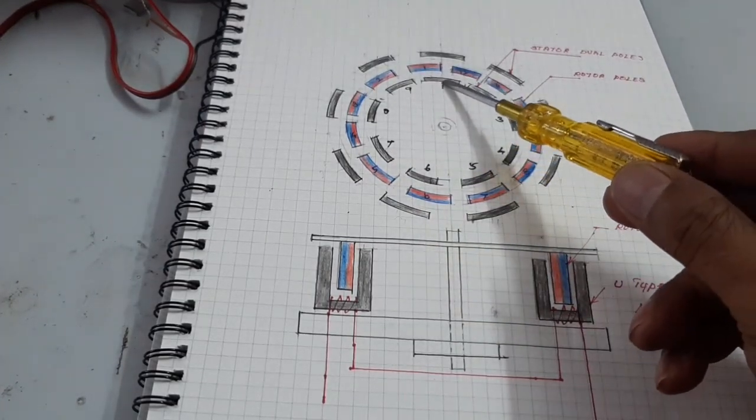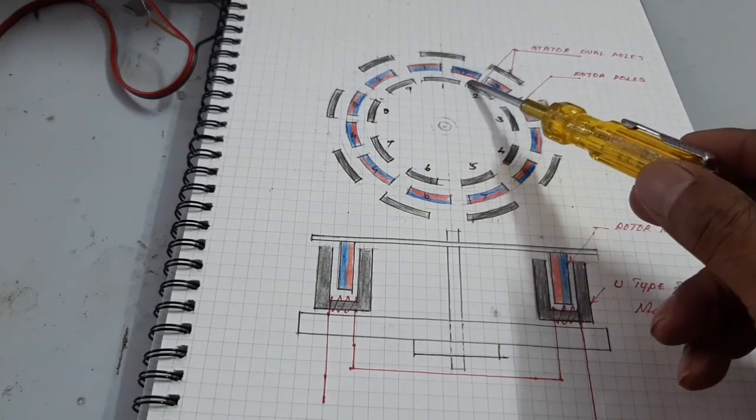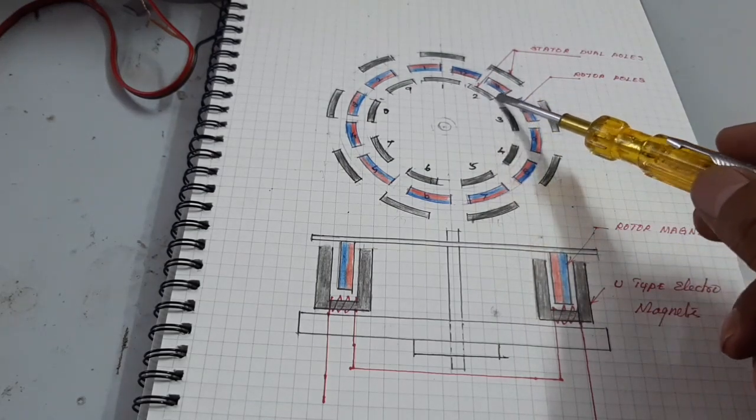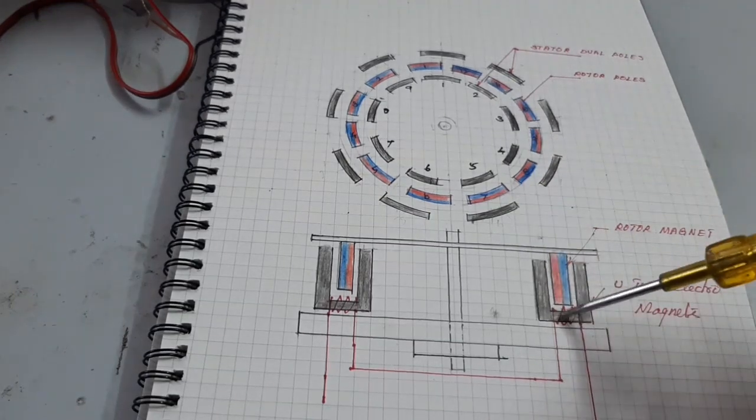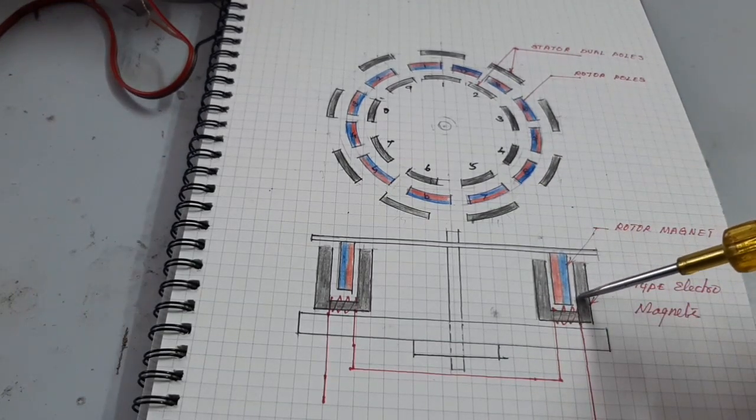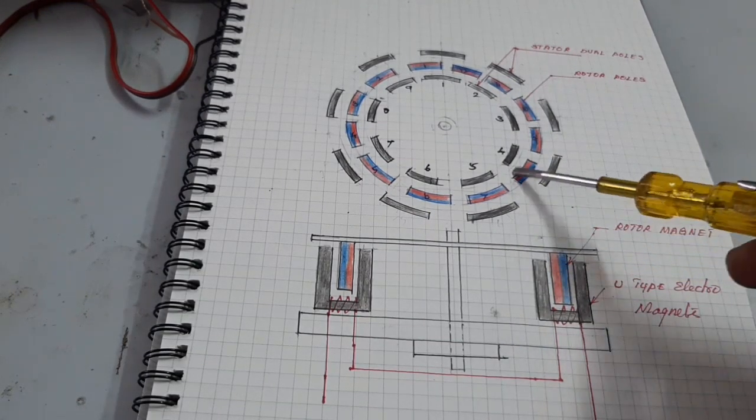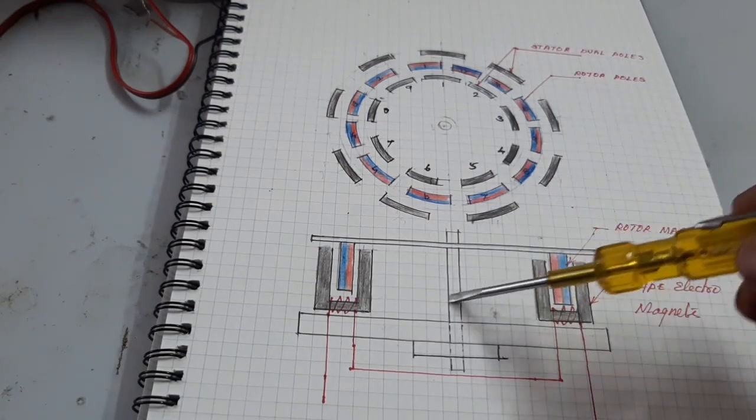9 dual poles, and the magnets are rotating between the stator poles. So now I am going to show how to make a stator and how to make a rotor.